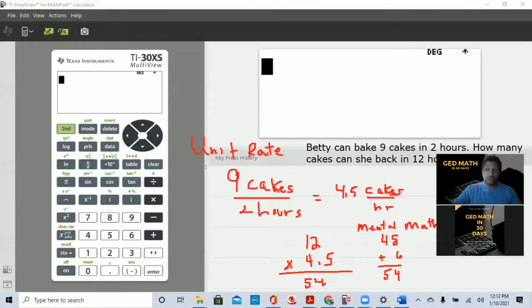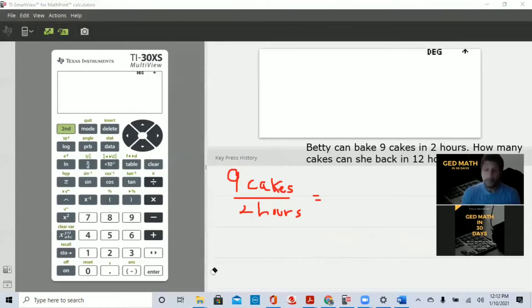But this is mental math. You want to get in the habit of doing as many problems as you can using mental math. But eventually on your GED, we're going to use that calculator for at least half of our exam. So again, we have 54. So this was solving this same problem using unit rate. Now, the third way I want to go over how to solve a proportion is cross-multiplication.